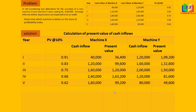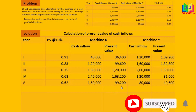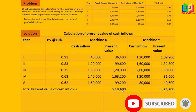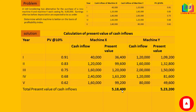We now add the present values of the cash inflows, because the formula requires the total present value of cash inflows. The total present value of cash inflows is rupees 5,18,400 for Machine X and rupees 5,23,200 for Machine Y.